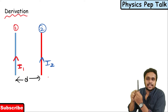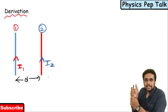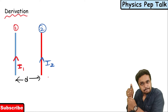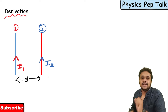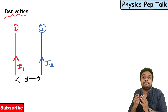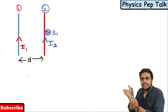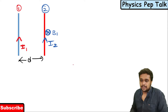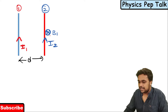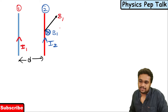If I place my right hand and the thumb indicates the direction of current, then the curl of my fingers gives the direction of the magnetic field. Using that, due to current flowing in conductor 1, there will be a magnetic field acting on conductor 2, and that direction will be going inwards — into the plane of the paper.